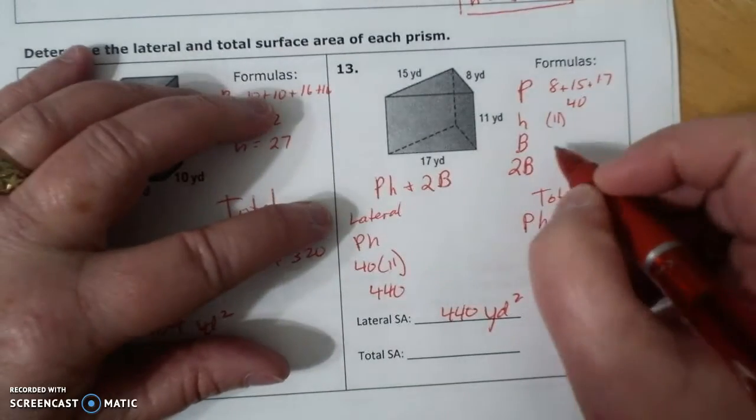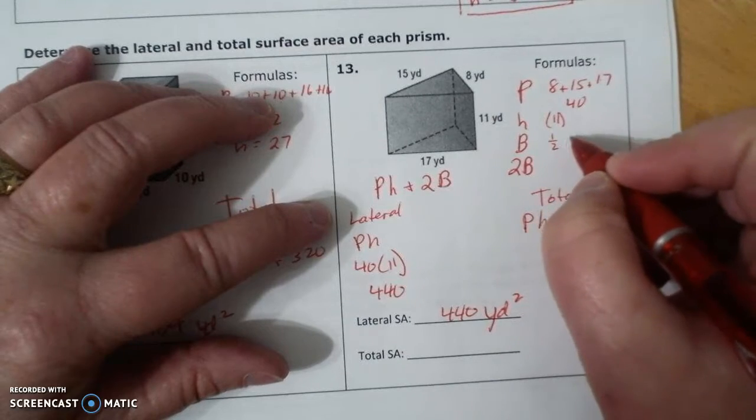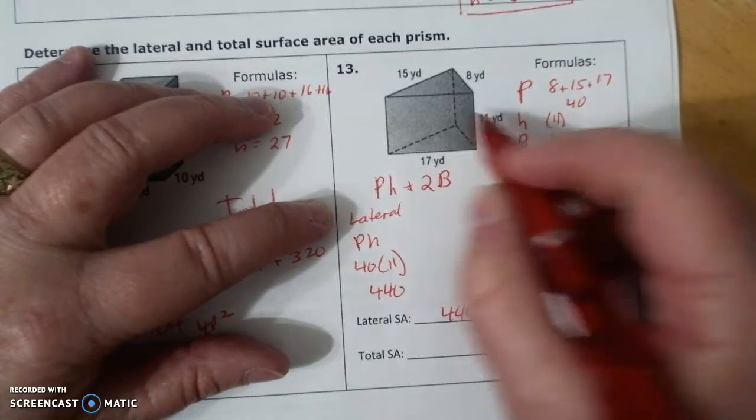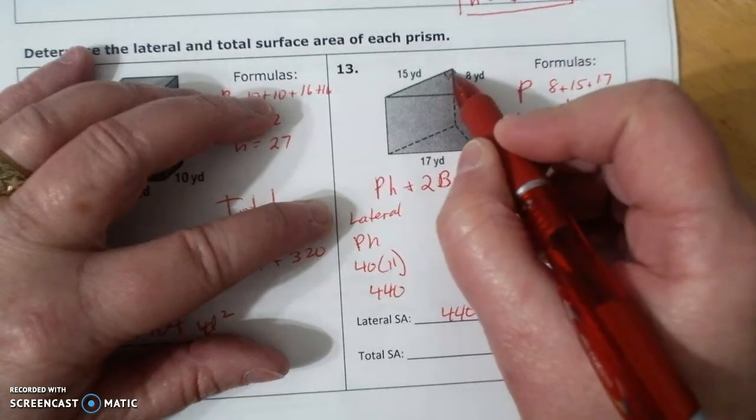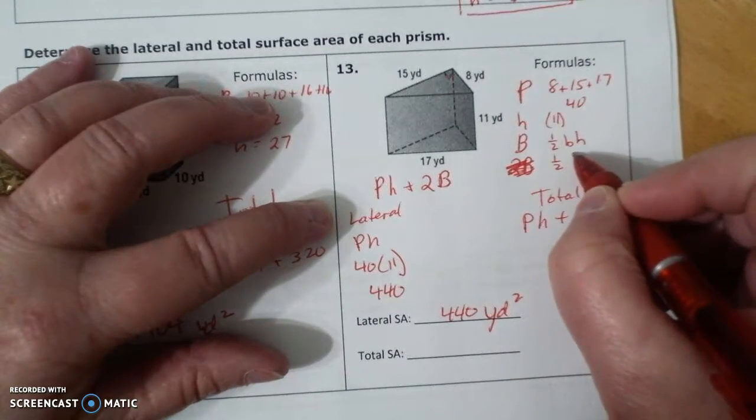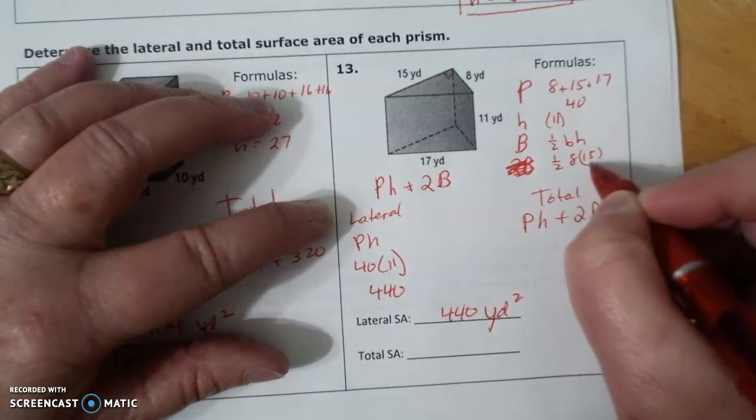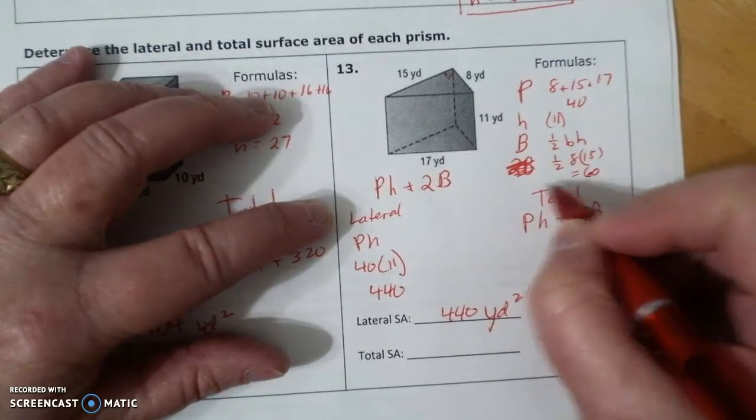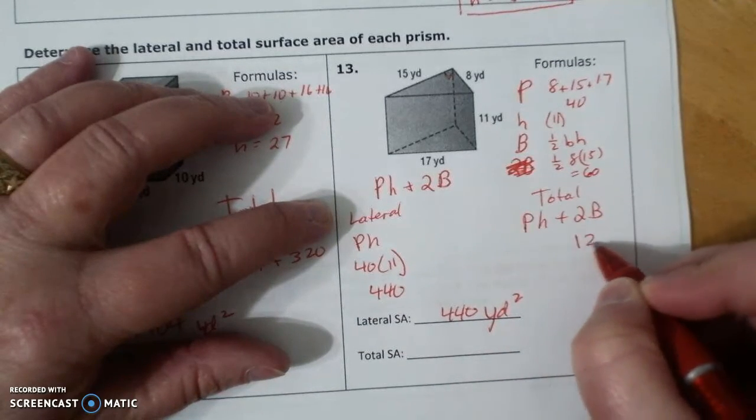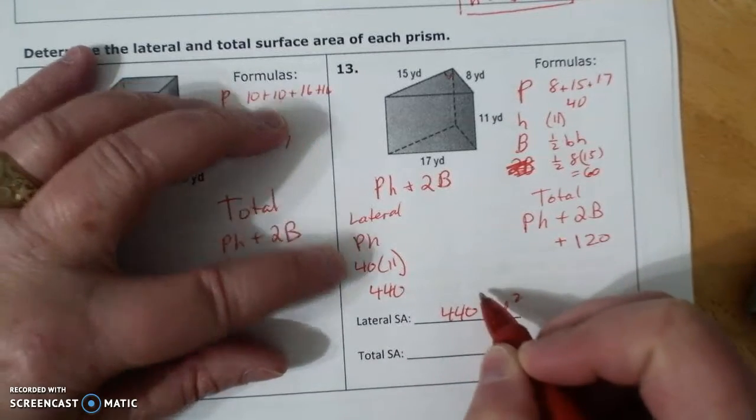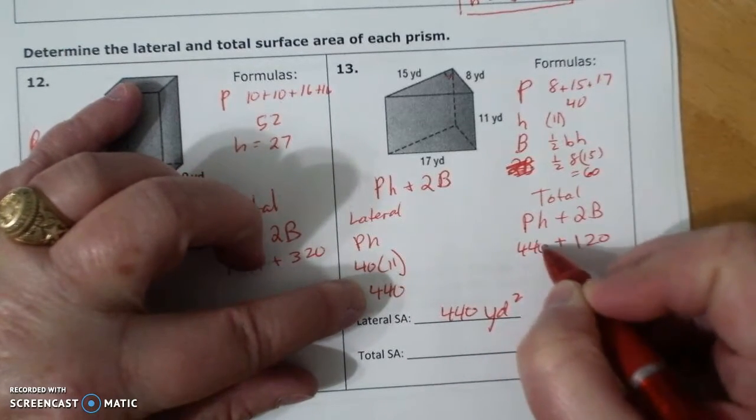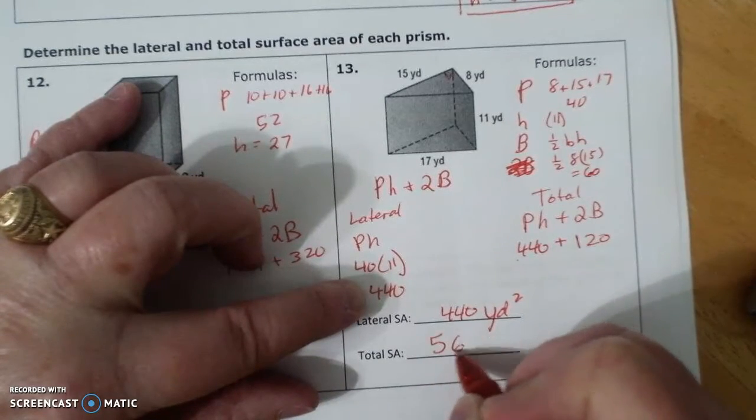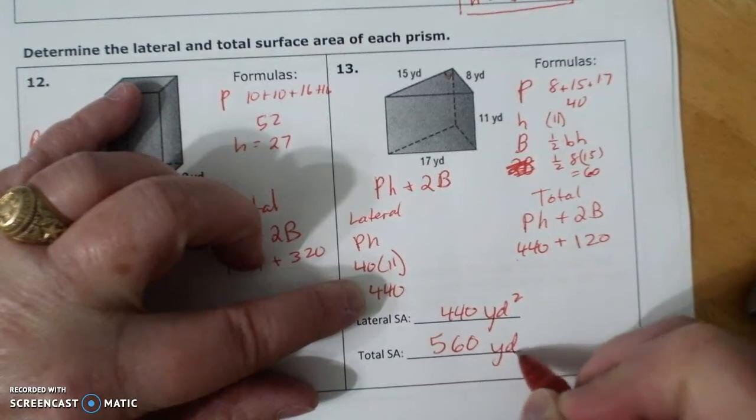And then b is 1 half little b little h, which is 1 half. There's my right angle right here. So it's 8 times 15, which is 60. And so 2b is 120. Plus my ph is 440, which is 560 yards squared.